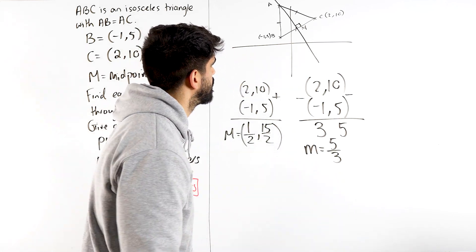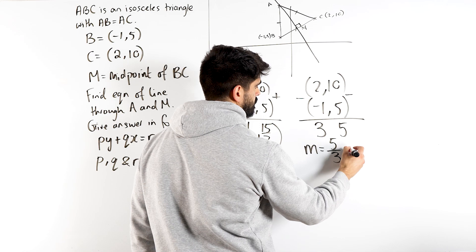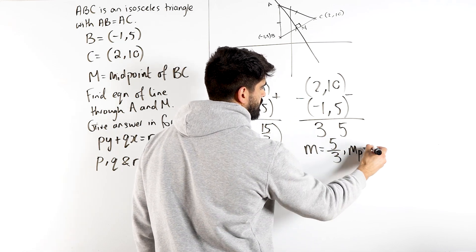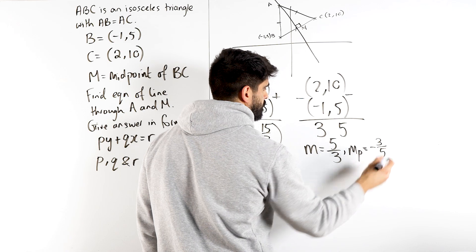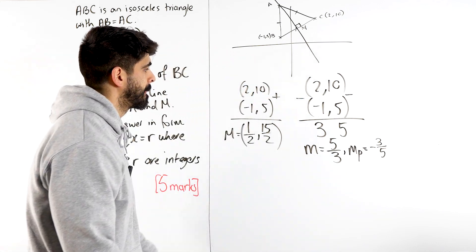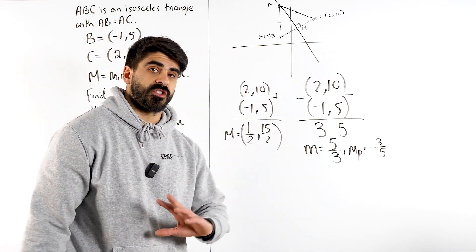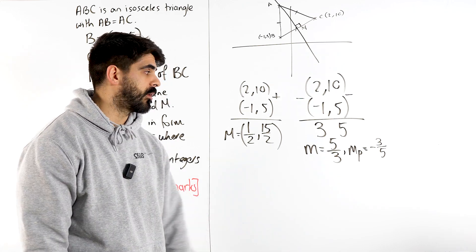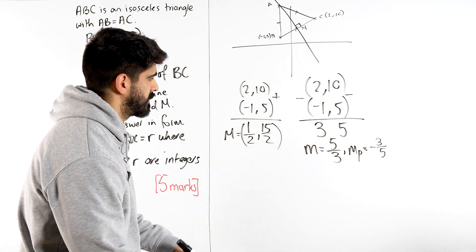So my perpendicular, my MP, is the negative reciprocal, negative 3 fifths. Now I'm going to show you guys the two different ways you could do this. So there's the better way, the y minus y1 formula and the y equals mx plus c formula.